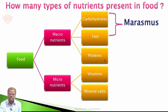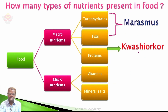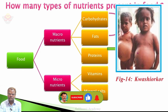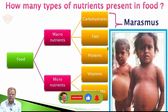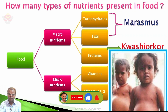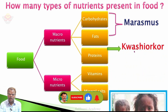Lack of proteins in the diet of children causes kwashiorkor. Kwashiorkor is a disease caused by lack of protein nutrients in children. These children appear like this — they have very loose tissues and look very sad and unhappy.